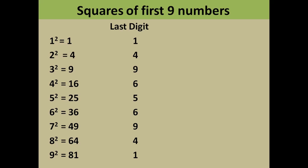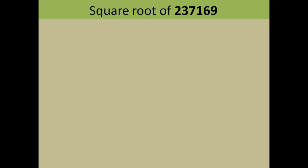The only thing you need to remember while finding the square root of a six-digit number is the last digit of the squares of the first nine numbers. So: 1 squared last digit is 1, 2 squared last digit is 4, 3 squared is 9, and so on. This is the only thing you need to remember while finding the squares of six-digit or higher numbers.